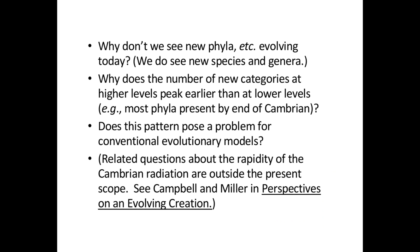There are a couple of questions you see asked often relating to evolution. A popular-level question is: why don't we see new phyla evolving today if evolution is true? A more sophisticated question relates to the overall pattern of origination. We generally see higher categories appearing earlier in the fossil record and lower ones a bit later — for example, most of the phyla, at least those with hard parts, are present by the end of the Cambrian. I wanted to examine whether this pattern poses a significant problem for conventional evolutionary models.